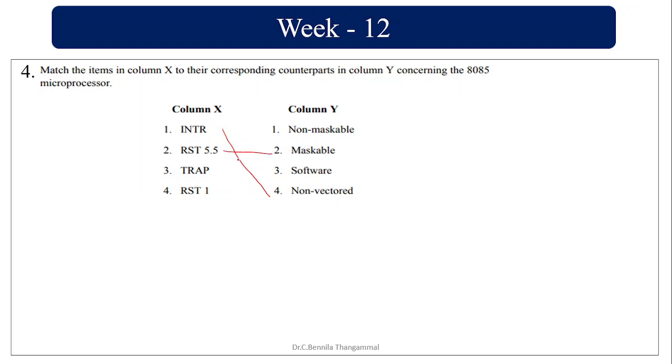5.5, 6.5 and 7.5 are maskable interrupts. TRAP is a non-maskable interrupt because it is unaffected. Since it is non-maskable, it is unaffected by interrupt enable.